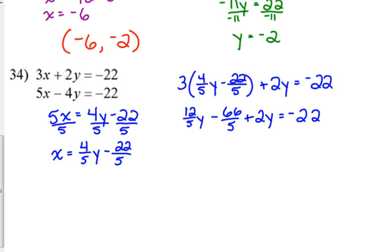If I'm trying to combine 12 over 5y with 2y, then without a calculator I'm going to express 2 as something over 5. Well, 10 divided by 5 is 2, so I'm going to rewrite that as 10 over 5, so then I can just add 12 plus 10 is 22. So that's 22 over 5y minus 66 over 5.